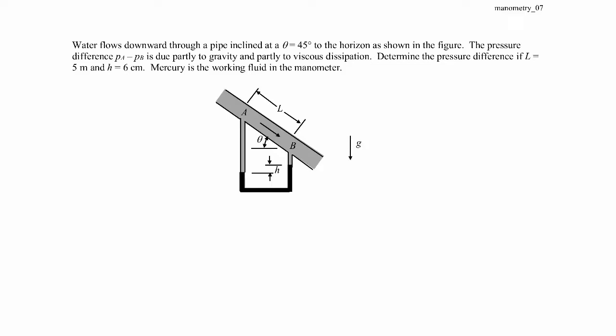In this example we have water flowing downward through a pipe inclined at a 45 degree angle, from point A to point B. The pressure difference, PA minus PB, is partially due to gravity and partially to viscous dissipation.